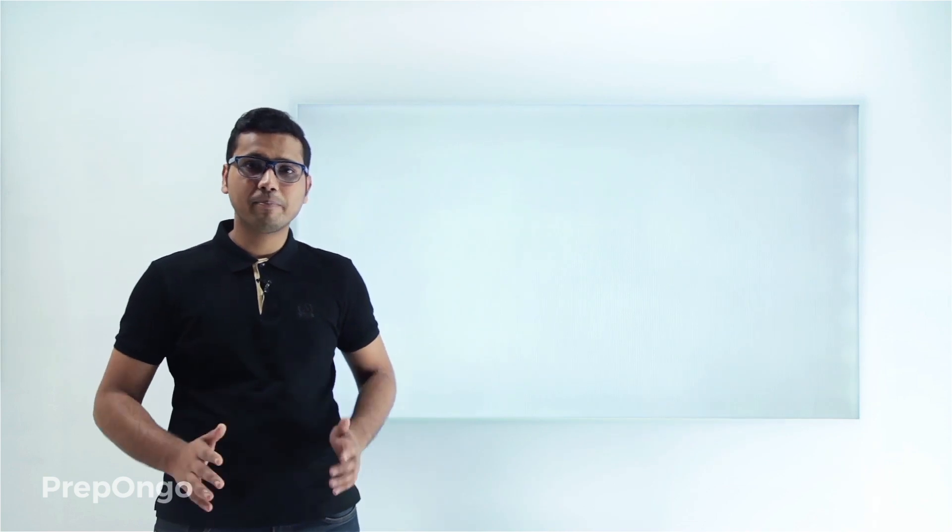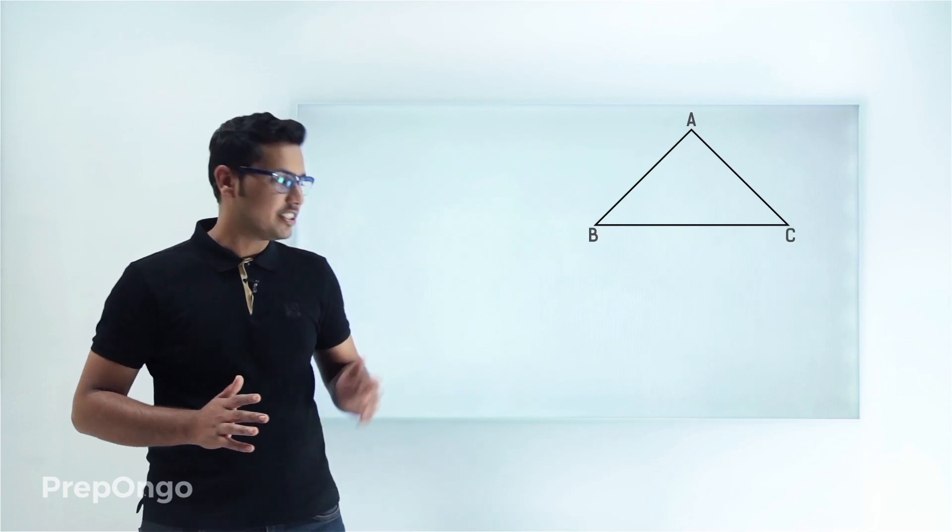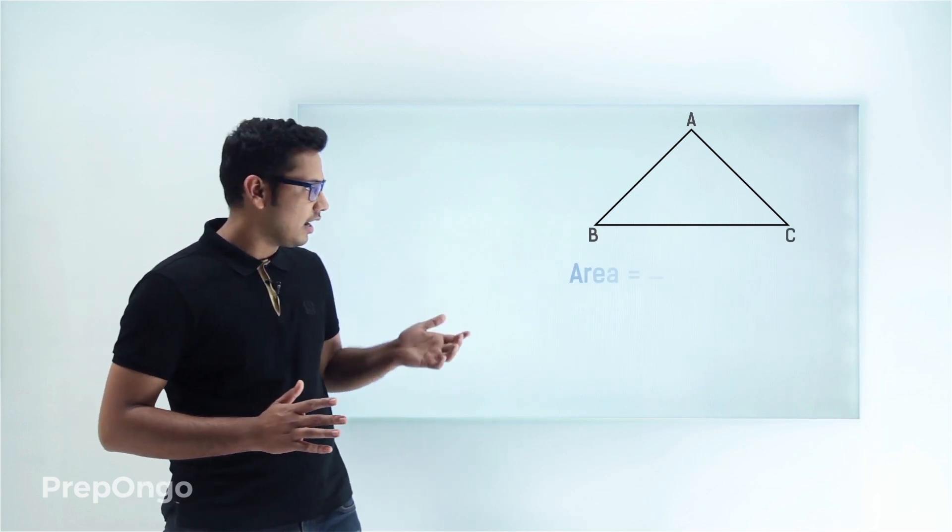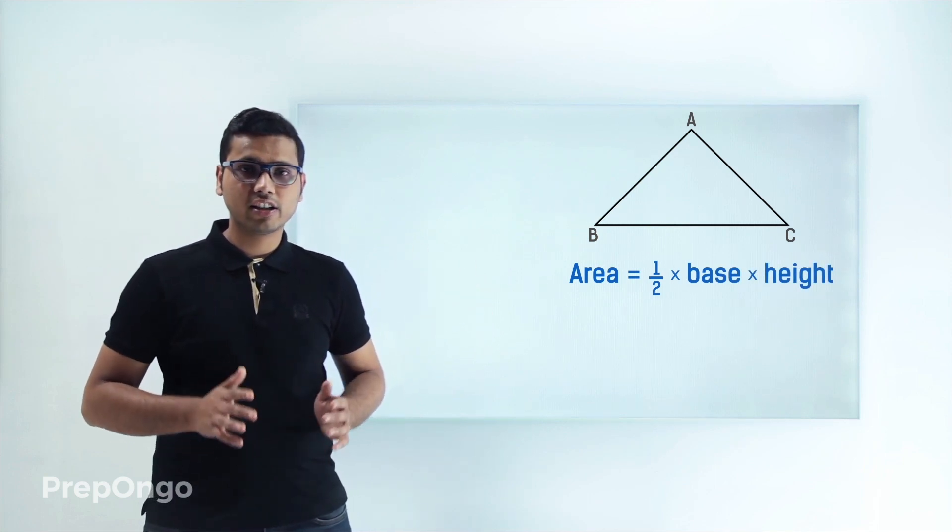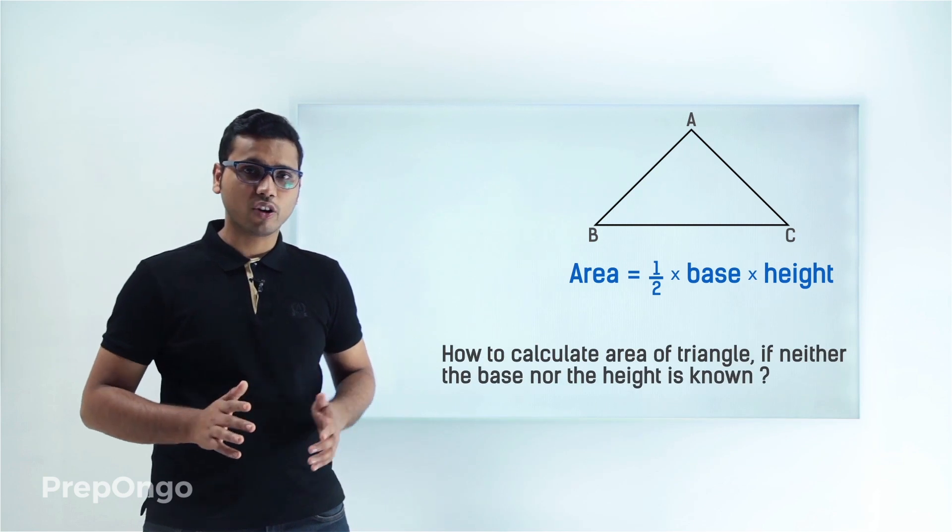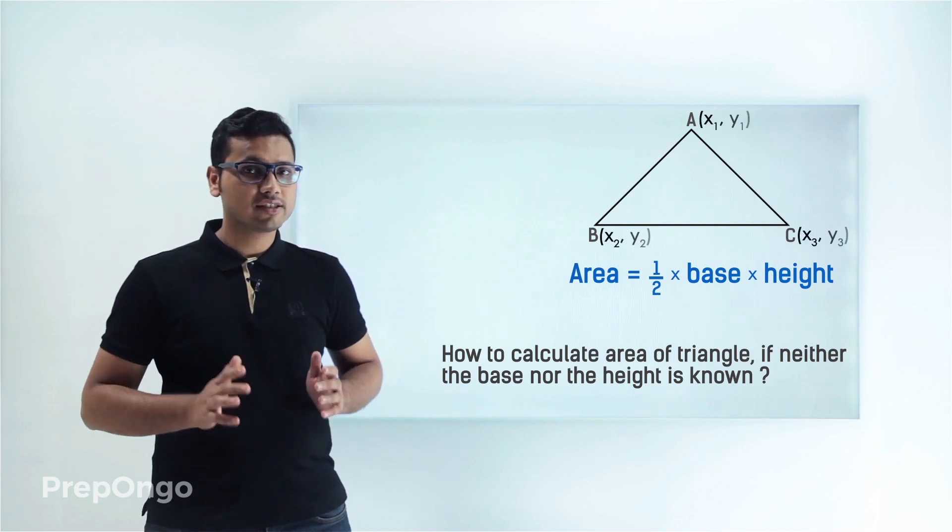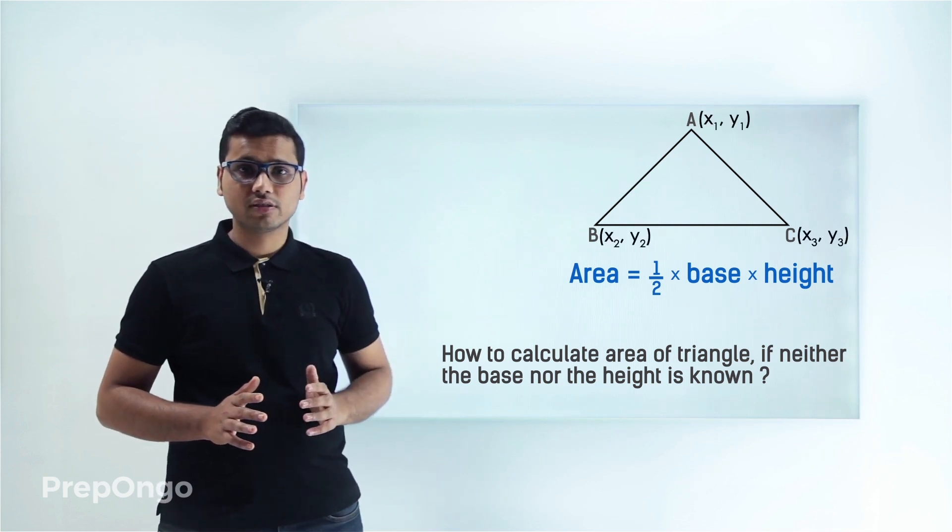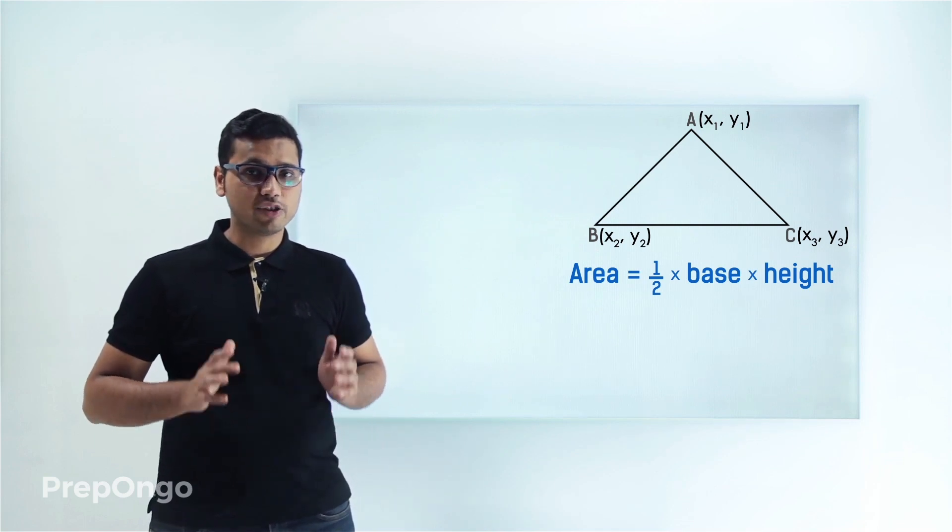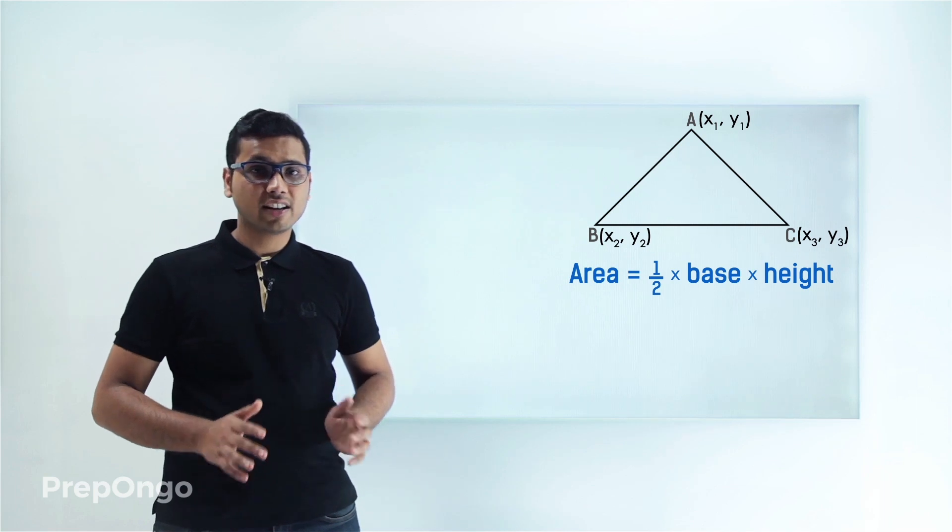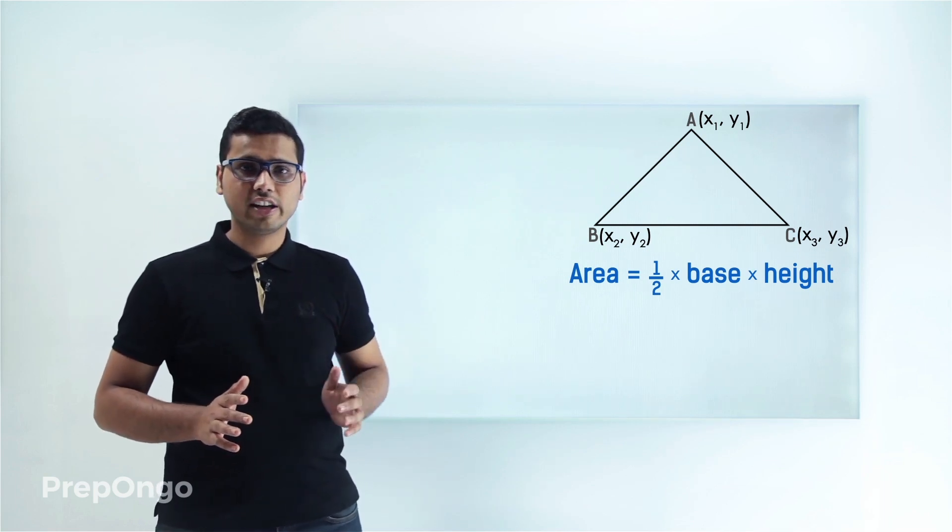You had studied the basic formula for finding the area of a triangle using its base and height: area equals half base times height. But how would you calculate the area if neither the base nor height is given, but instead the coordinates of the vertices are provided? We'll understand how to calculate the area of a triangle using its vertices' coordinates and then apply this result to find the condition of collinearity of three points.